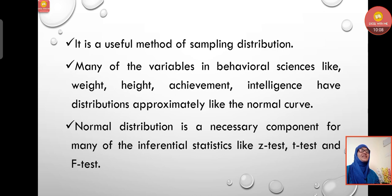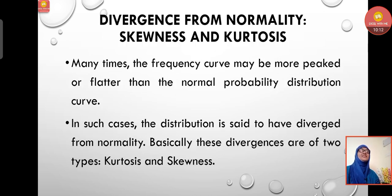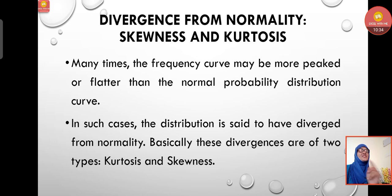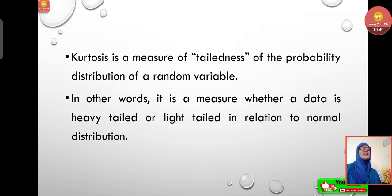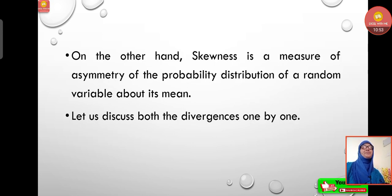Normal distribution is a necessary component for many inferential statistics like the z-test, t-test, and f-test. Now let's see divergence from normality — that is skewness and kurtosis. Many times the frequency curve may be more peaked or flatter than the normal probability distribution curve. In such cases, the distribution is said to have diverged from normality. These divergences are of two types: kurtosis and skewness. Kurtosis is a measure of the tailedness of the probability distribution of a random variable — whether it is heavy-tailed or light-tailed relative to the normal distribution. Skewness is a measure of asymmetry of the probability distribution of a random variable about its mean.